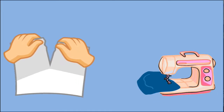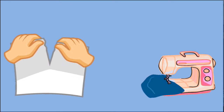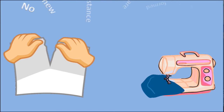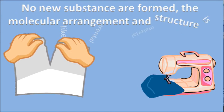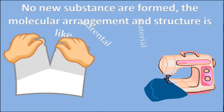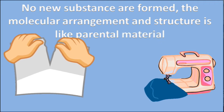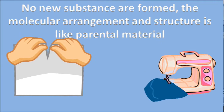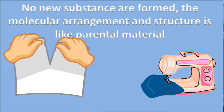Tearing paper and sewing a dress from cloth are examples of physical change. In physical change, no new substances are formed. The molecular arrangement and structure remains like the parental material from which it is made.